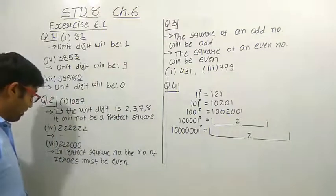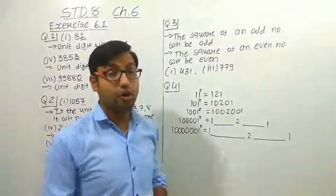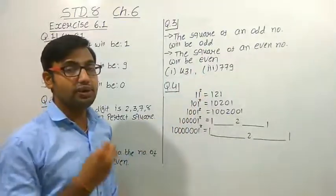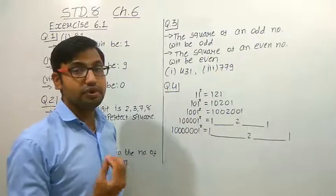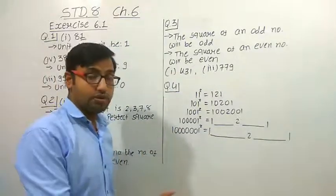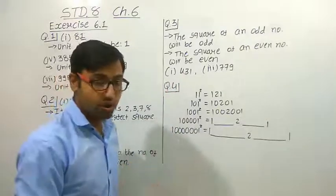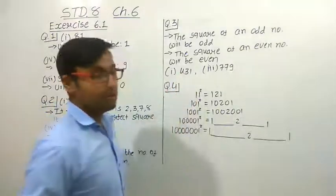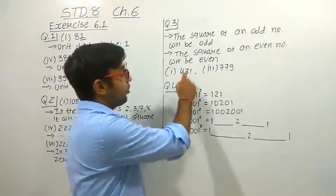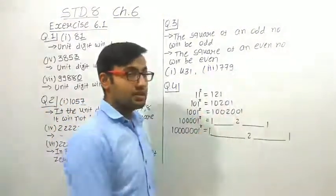So these are the very basic things to keep in mind. By these things, you can identify whether a number will be a perfect square or not. Now let us look at question number 3: the squares of which of the following would be odd numbers? Two things to remember: the square of an odd number will always be odd, and the square of an even number will always be even. You can verify this from the squares of numbers 1 to 20. The first number given is 131, which is odd, so its square will be odd. Similarly, 779 is also odd, so its square will obviously be an odd number.